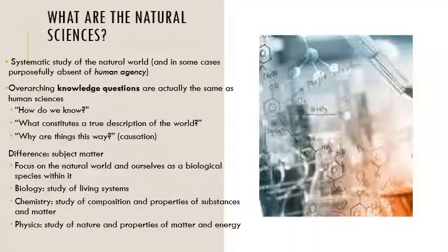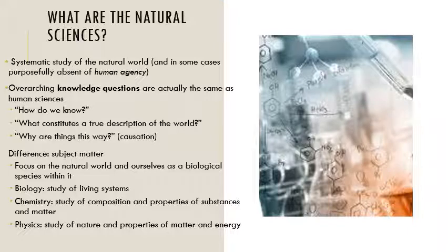What are natural sciences? In terms of IB Theory of Knowledge, the textbook definition is that it's the systematic — meaning purposeful — study of the natural world, in some cases purposefully absent of human agency. So taking humans out of the equation sometimes, studying humans as a life form but not necessarily behaviors, looking at the natural world and things that can be experienced and seen. We can have a discussion regarding scientific realism versus scientific anti-realism — some schools of thought focus only on what can be directly observed, while others allow more interpretation.